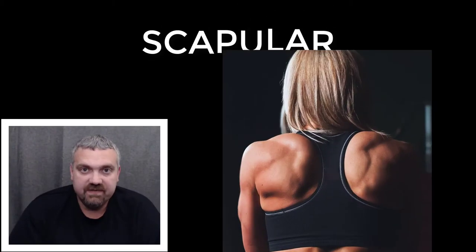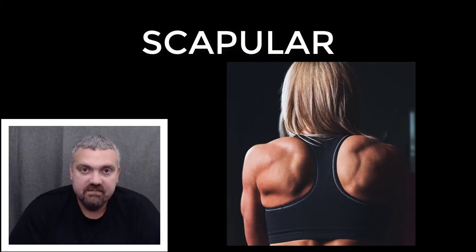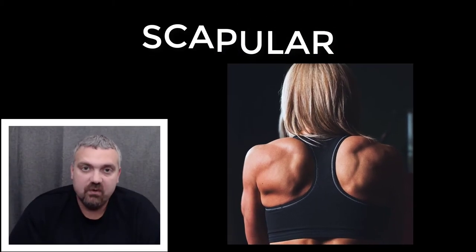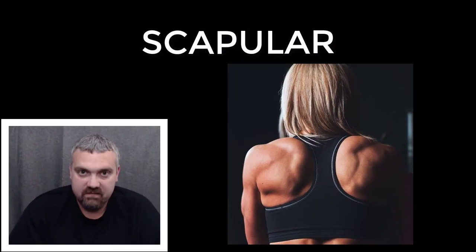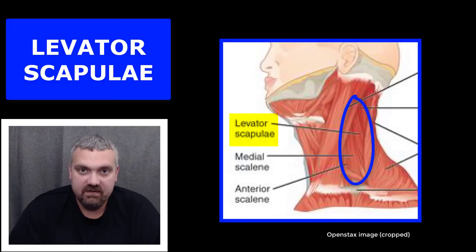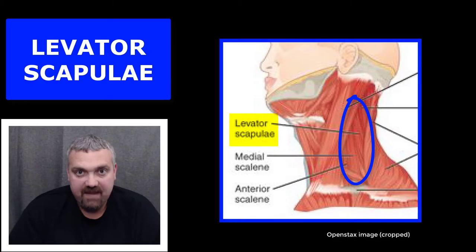Next, we have scapular. Scapular is going to describe the region that the scapula, or your shoulder blade, is in. A key example here would be the levator scapulae muscle, which elevates the scapula.